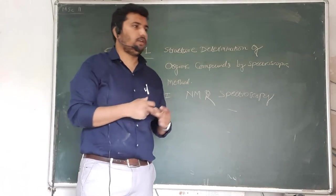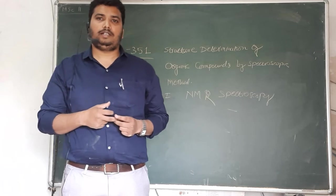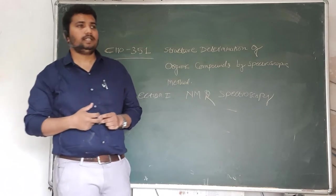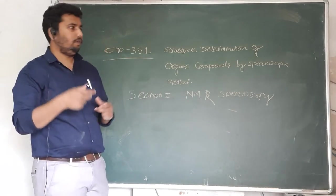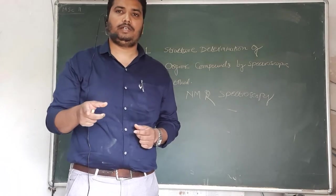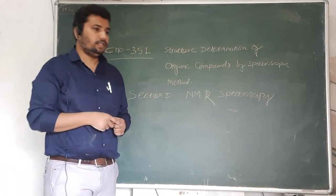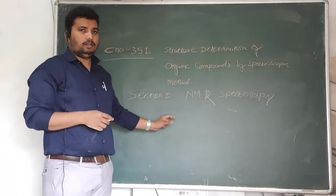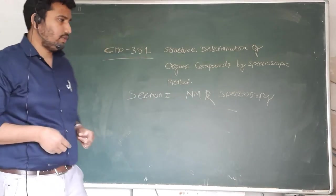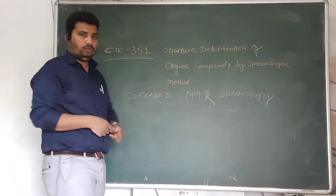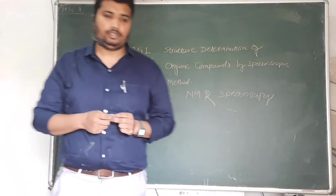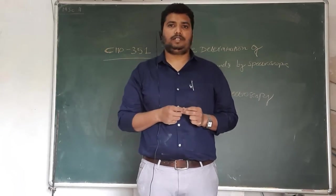NMR is not only useful for elucidating structure, but it is also useful for determining stereochemistry. Up to this point you might have studied only structure elucidation without stereochemistry, but from this lecture you will understand that NMR spectroscopy is used in stereochemistry determination also.